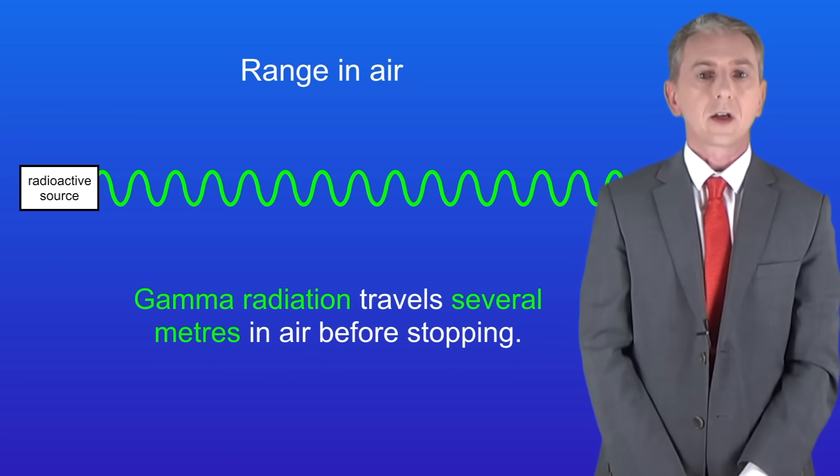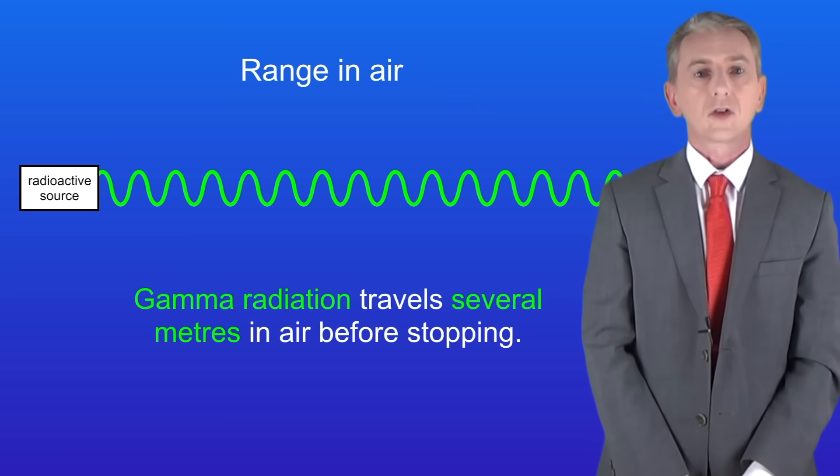Now gamma radiation can travel much further than either alpha or beta particles, so gamma radiation travels several meters in air before stopping.